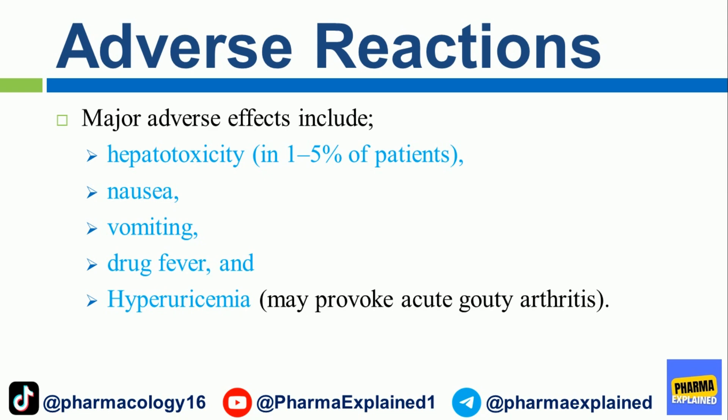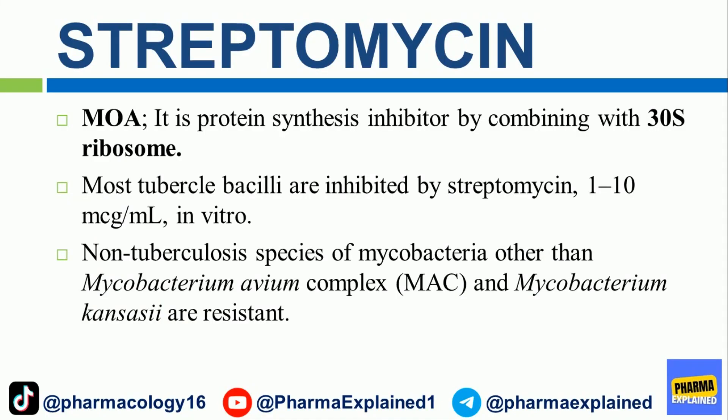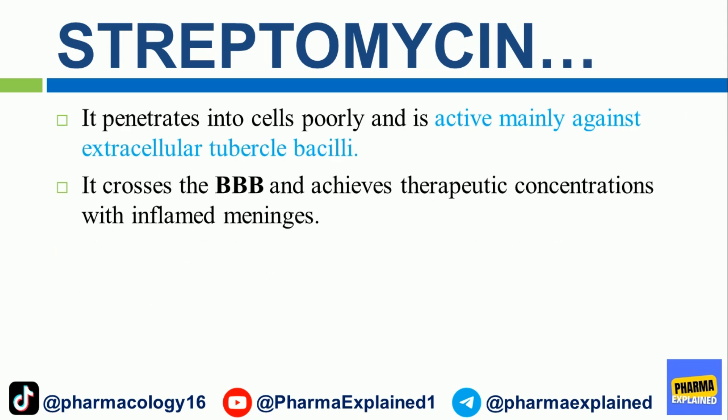Adverse reactions of pyrazinamide include hepatotoxicity in 1–5% of patients, nausea, vomiting, drug fever, and hyperuricemia, which may provoke acute gouty arthritis. Streptomycin mechanism of action: It is a protein synthesis inhibitor by combining with the 30S ribosome. Most tubercle bacilli are inhibited by streptomycin at 1–10 mcg/mL in vitro. Non-tuberculosis species of mycobacteria other than mycobacterium avium complex (MAC) and mycobacterium kansasii are resistant.